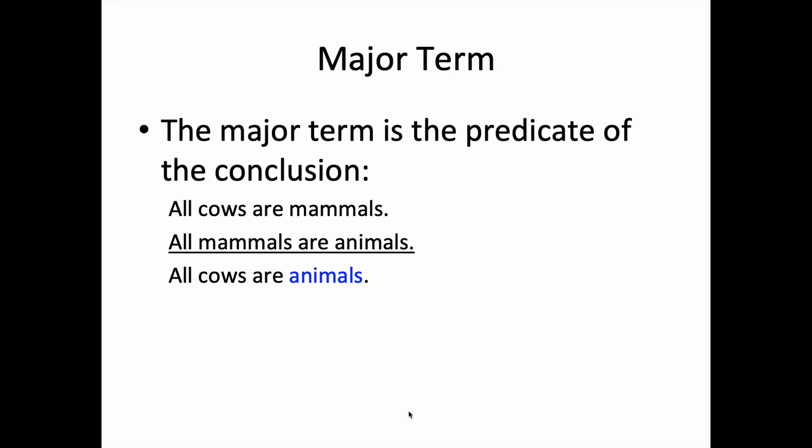Now let's focus on the elements of the categorical syllogism. We've got the major, the minor, and the middle terms. First, the major term.